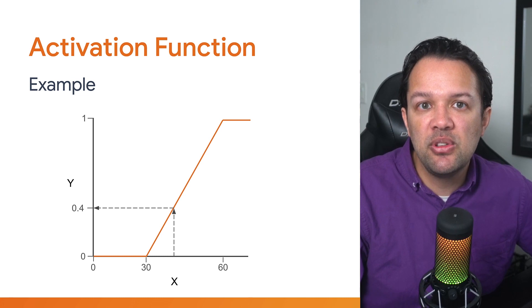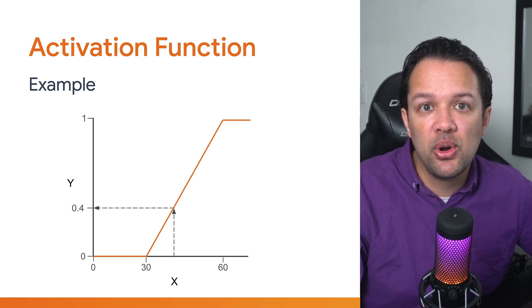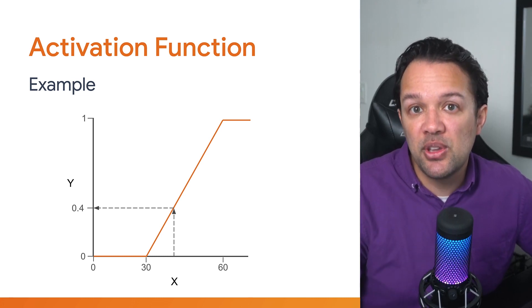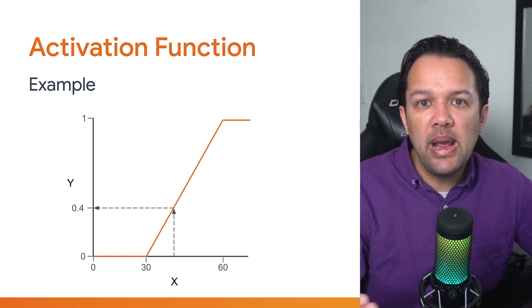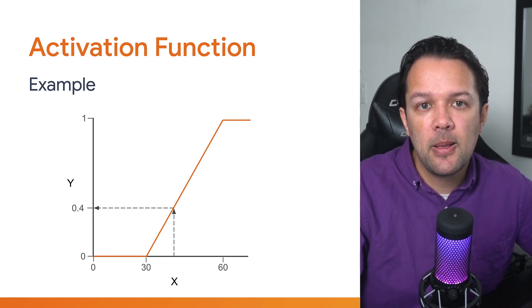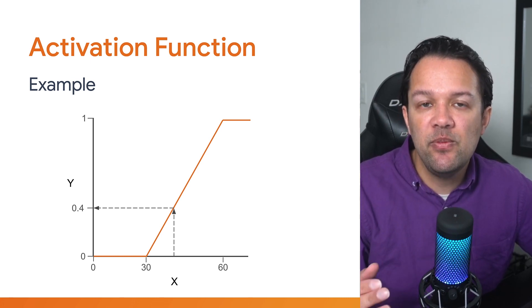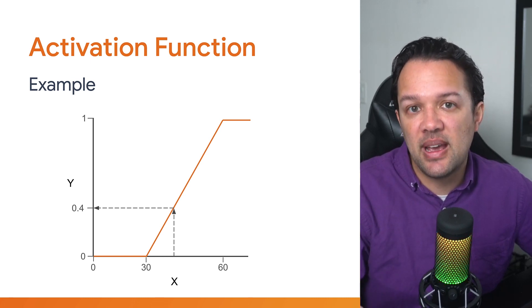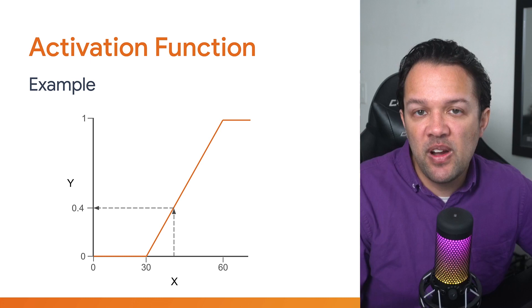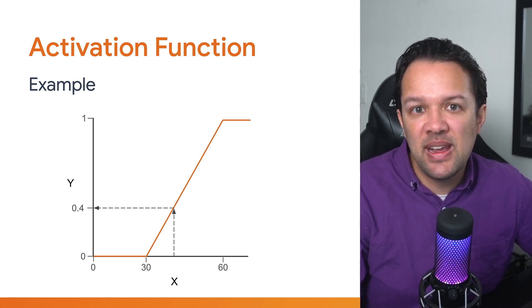Now using the total value you saw from the example neuron you saw on the previous slides, you calculated the total of 42. If you fed 42 into this graph, the y output would be around 0.4 using this example activation function. Now in mathematics, the name for the equation of a line that produces a certain graph shape like this is known as a function. As this special function defines when the neuron will activate to produce an output, you call this the activation function.